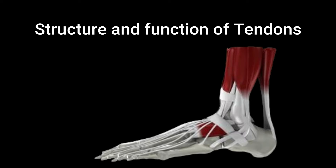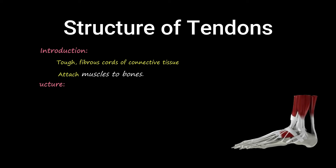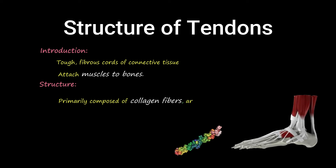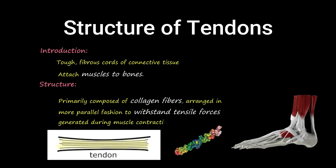Now, let's talk about tendons. Tendons are tough, fibrous cords of connective tissue that attach muscles to bones. Like ligaments, tendons are primarily composed of collagen fibers, but they are arranged more parallel to withstand tensile forces generated during muscle contraction.